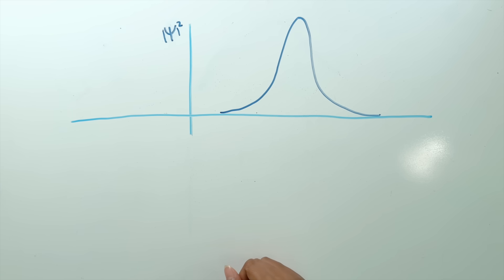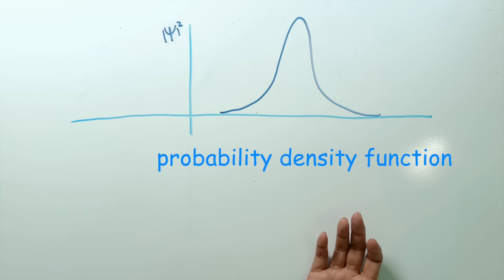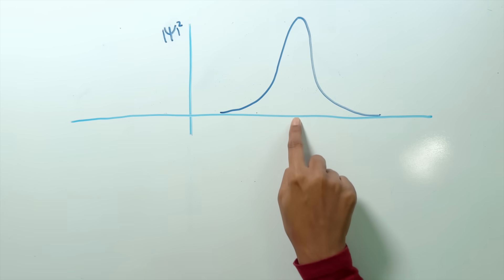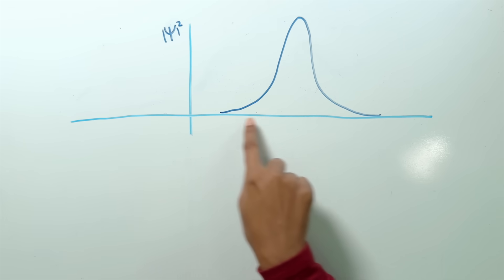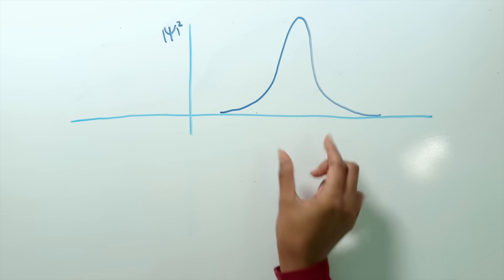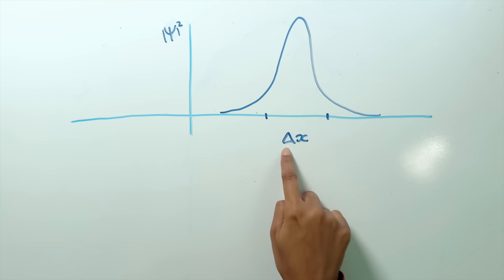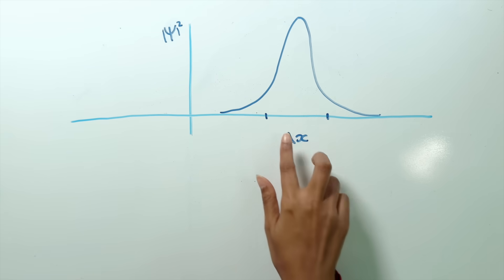We want some way to quantify where the electron is and how spread out it is. That's why we draw a graph called the probability density function for the electron. It gives us an idea of where the electron roughly is — here you can see it's mostly centred around one point, mainly inside a certain region. We can say the spread is a certain amount, and the way we actually calculate this is using the standard deviation.